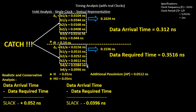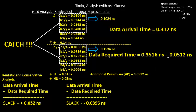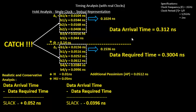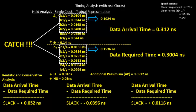We'll remove the error from the capture clock section. We have the data required time which encapsulates everything, so we'll remove this particular error: 0.3516 nanoseconds minus 0.0512 nanoseconds, which comes to around 300 picoseconds or 0.3004 nanoseconds. This is your new data required time, and with this new required time and the data arrival time, the slack we get is positive 11.6 picoseconds or 0.0116 nanoseconds — we are in safe hands now. This is the power of pessimism removal, which has to be taken care of while doing STA for setup and hold timing.